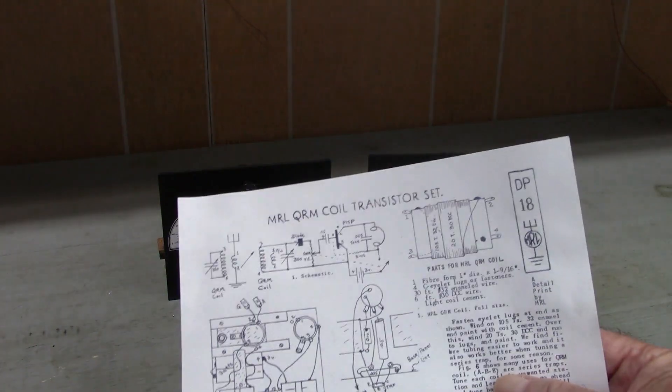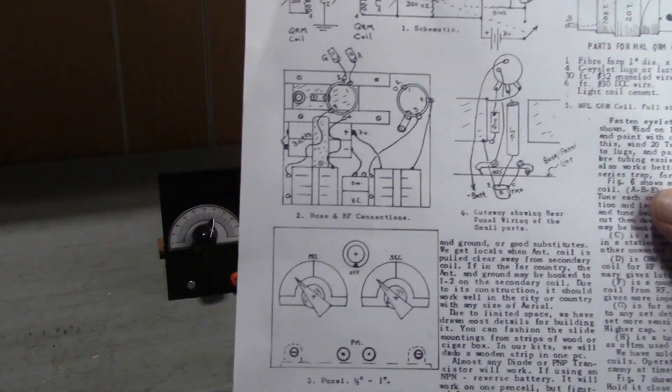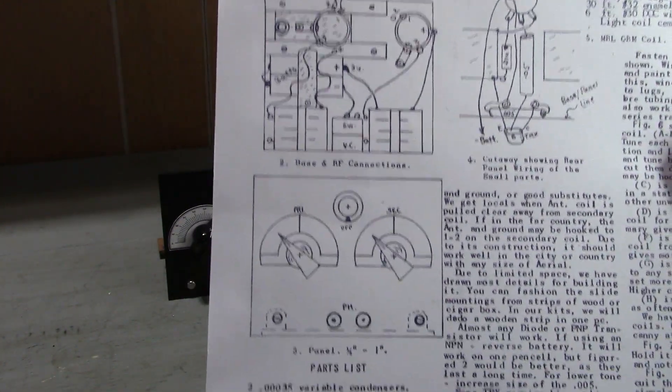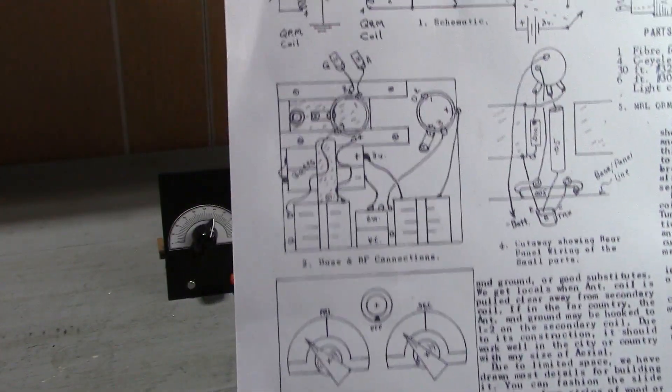Plans to build this set can be found in MRL Detail Print 18. There's a link to it below in the description. I used this detail print as well as an actual kit to try to make a faithful reproduction.